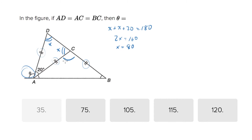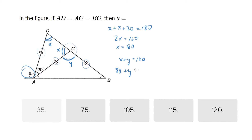Now also, the sum of angles across a line must equal 180. So let's call this Y. X plus Y equals 180, and if X is 80, then Y must be equal to 100.